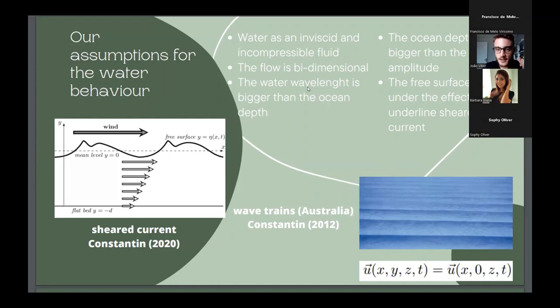Consider that the water wavelength is bigger than the ocean depth, and also the ocean depth is bigger than the wave amplitude, this is my hypothesis. And finally, that the free surface wave here, exemplified by this image, this free surface wave is under the effects of the underlying shear current.